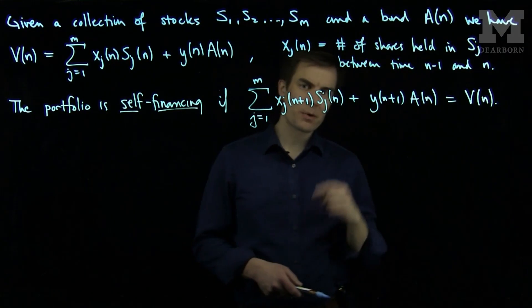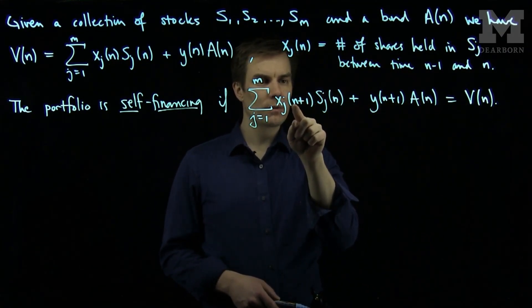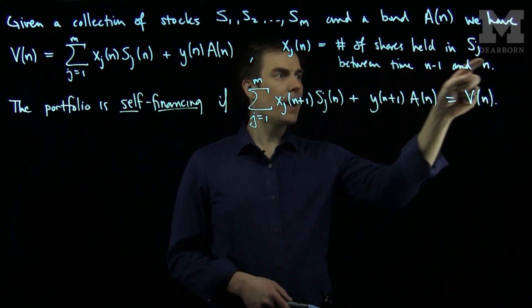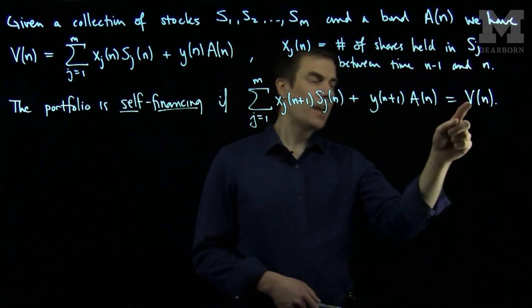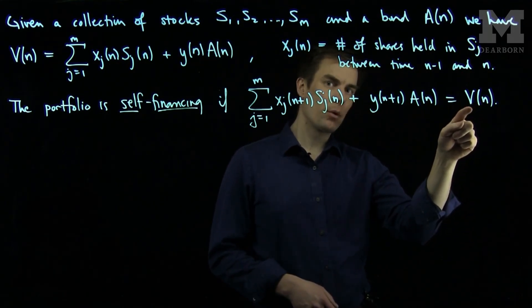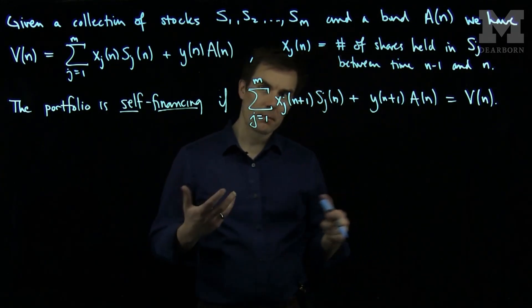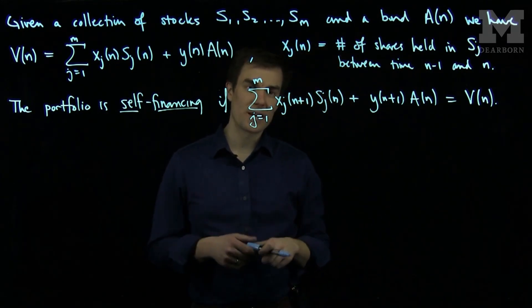This expression says that if you know how much you'd like to invest between time n and n+1, if you can invest that amount given your current value of your portfolio, then you can continue investing indefinitely. This investment strategy will sustain itself.